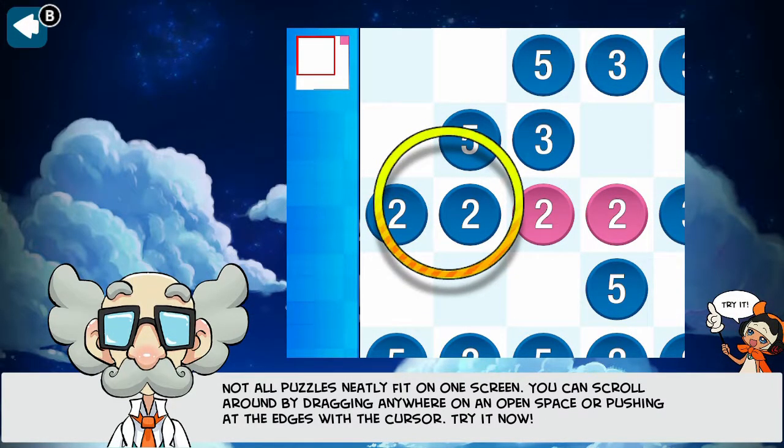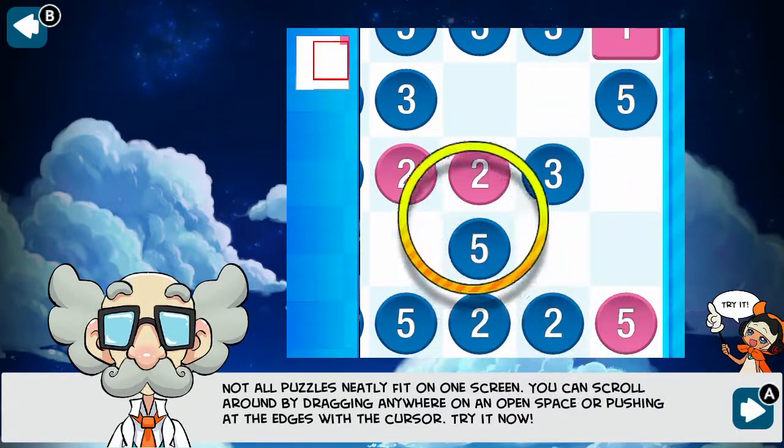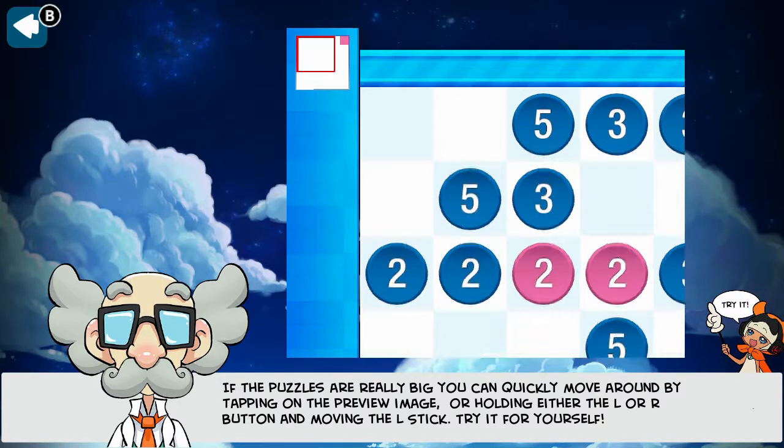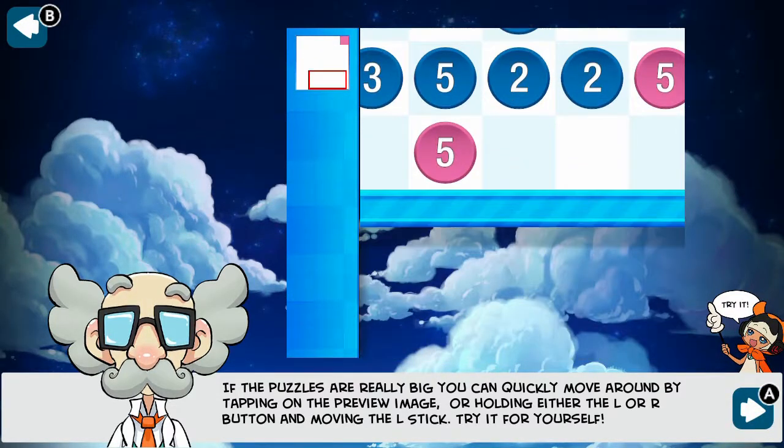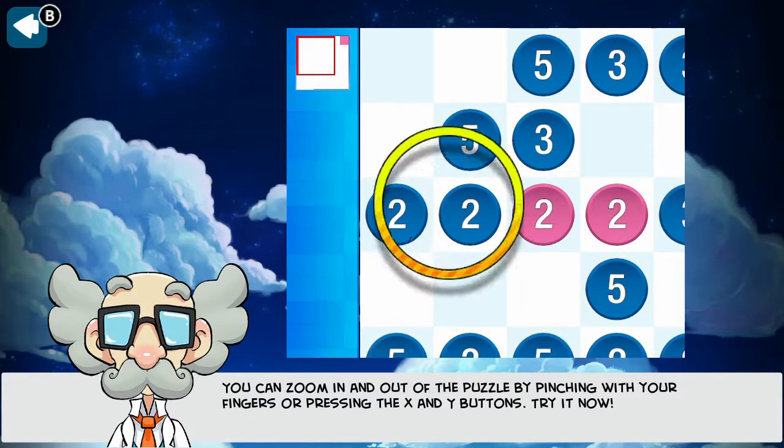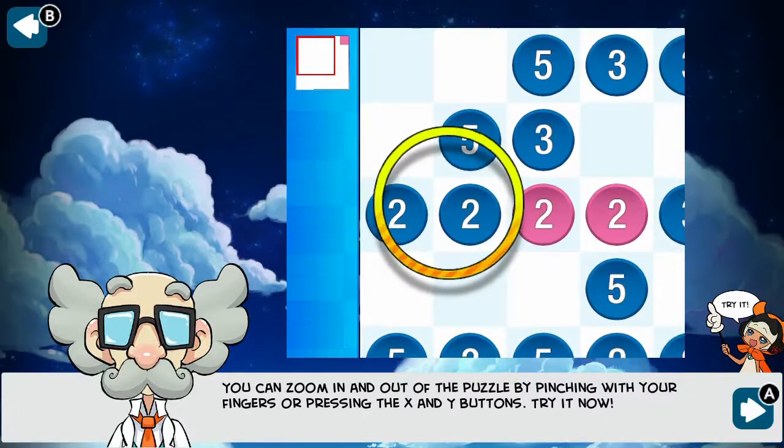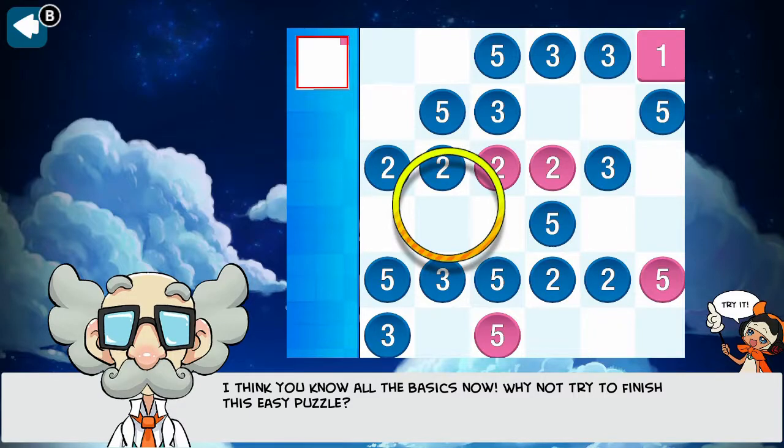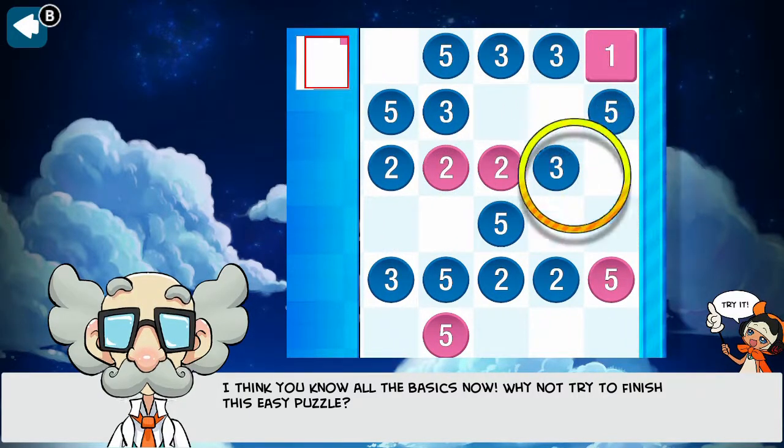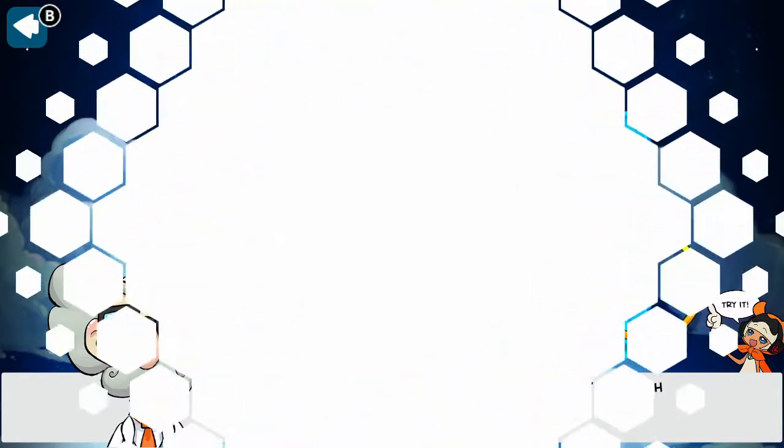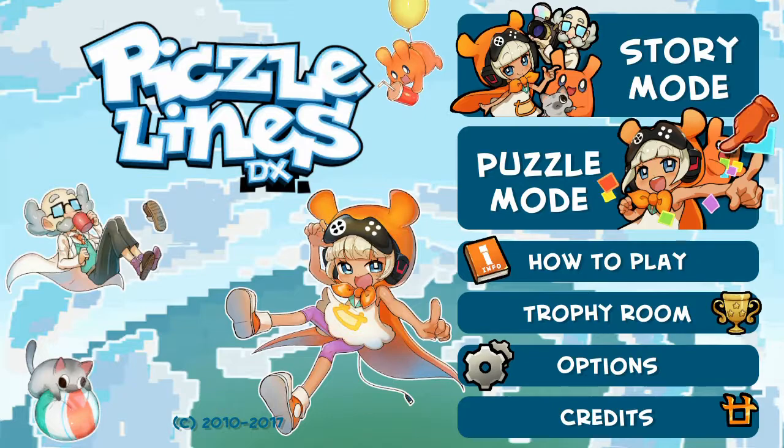So here they're telling us how to move around the screen. And you can zoom around with the L button or the R button. You don't really need it on smaller ones, but in the bigger ones it comes in handy. Zoom in and out with X and Y. They're going to tell us to finish this puzzle, but that doesn't give you a real idea of how the game goes. So I'm going to go over to puzzle mode.